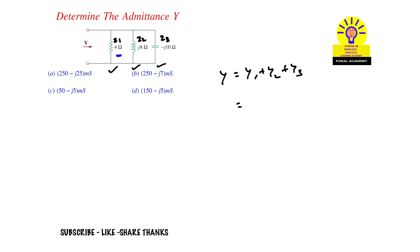For the resistor, the admittance is 1/4. For the inductor, it's 1/J8, and for the capacitor, 1/minus J10. Simplifying this, we get 0.25 minus j0.025, which can be written as 250 minus j25 milliSiemens.